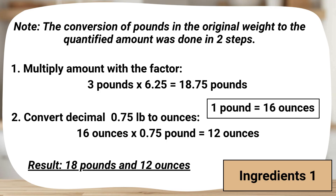For 25 servings, ingredient 1 should be 18 pounds and 12 ounces. It simply means the original recipe used 3 pounds for 4 servings. To make 25 servings, we multiply by the conversion factor 6.25. That gives 18.75 pounds, which is 18 pounds and 12 ounces after converting the decimal part into ounces.